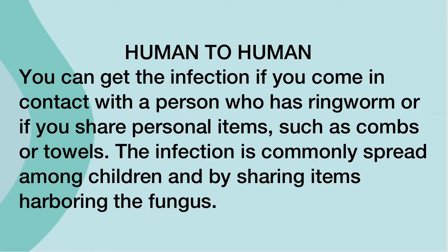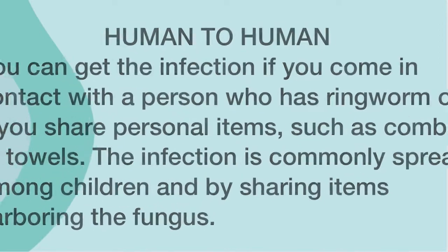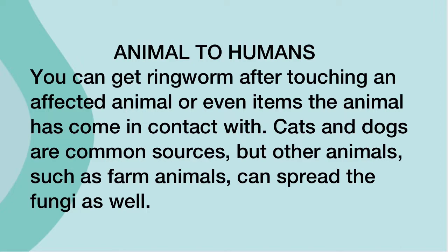Human to human: you can get the infection if you come in contact with a person who has ringworm or if you share personal items such as combs or towels. The infection is commonly spread among children and by sharing items harboring the fungus. Animal to human: you can get ringworm after touching an affected animal or items the animal has come in contact with. Cats and dogs are common sources, but farm animals can spread the fungi as well.